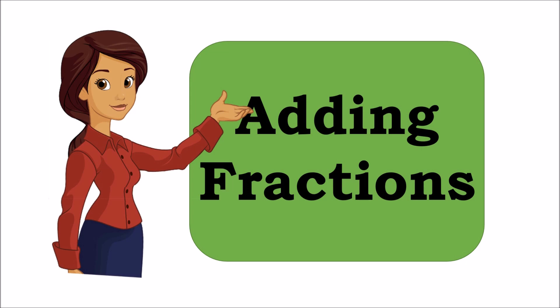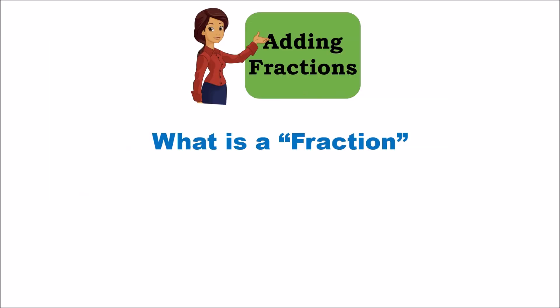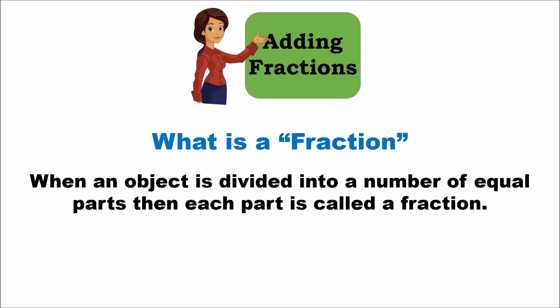Let's first look at what a fraction is. When you take an object and you divide that object into a number of equal parts, then each part of that object is called a fraction. For example, 2 by 5 — you take an object, divide it into 5 equal parts, and of those 5 equal parts you take 2, so 2 by 5 is the fraction.